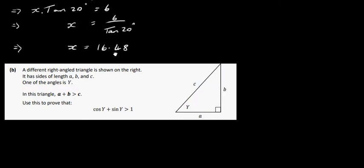Okay, so that's part A done. So let's have a look at part B. In part B here, we have a different right angle triangle, and it has sides of length A, B, and C here, and an angle Y and a right angle here.